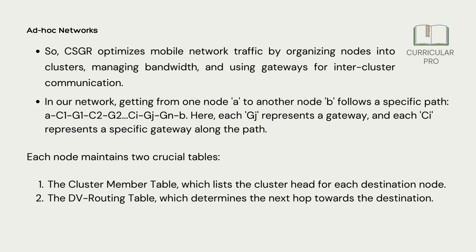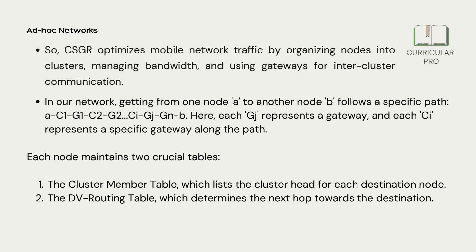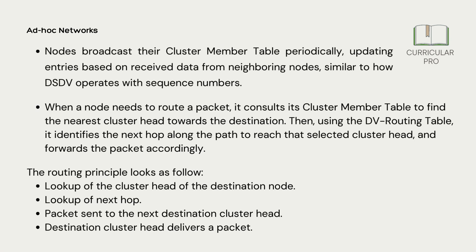Each node maintains two crucial tables. Number 1: the cluster member table, which lists the cluster head for each destination node. Number 2: the DV routing table, which determines the next hop towards the destination. Nodes broadcast their cluster member table periodically, updating entries based on received data from neighboring nodes, similar to how DS-DV operates with sequence numbers.